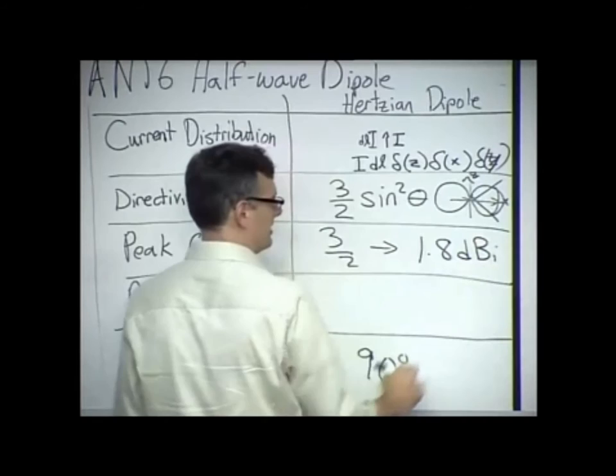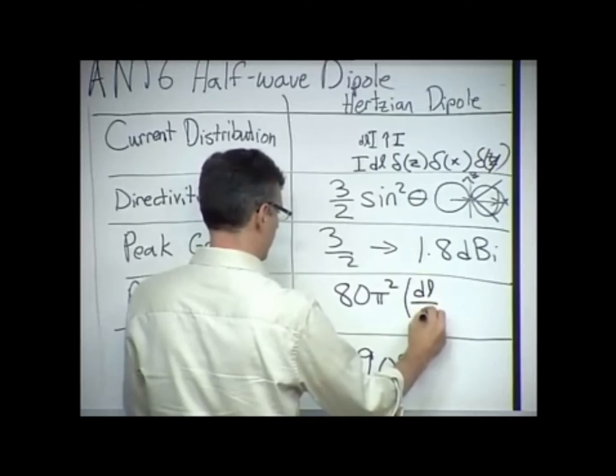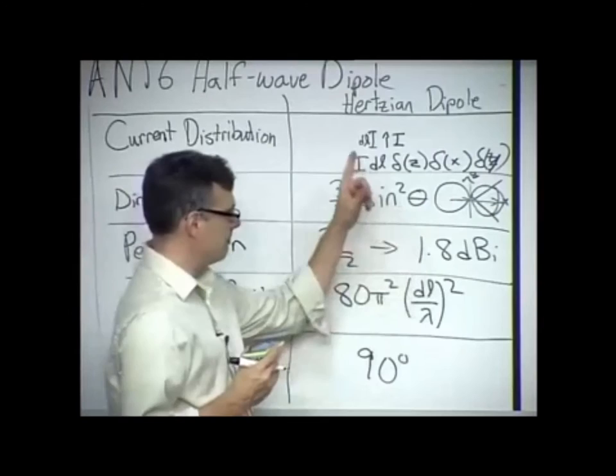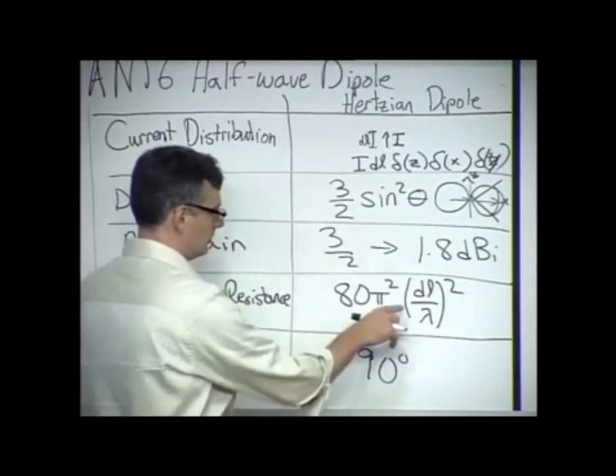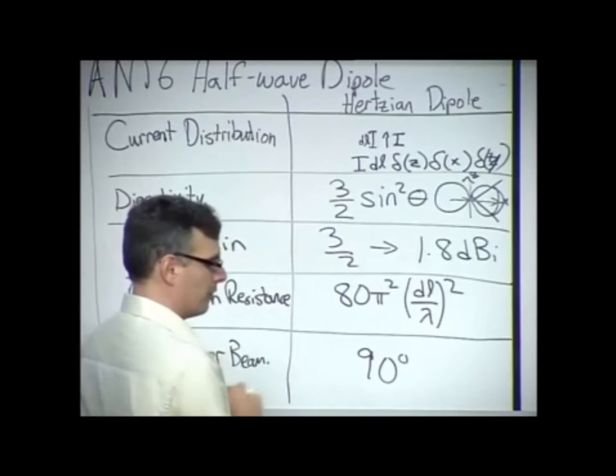And finally, we had an expression, basically 80 pi squared DL over lambda quantity squared. DL is much less than a wavelength, so this is a small number. And you've got to square it to begin with. So, this winds up being a very small number, only a few ohms for an electrically small dipole. Now, that's our Hertzian dipole. That should be just summary of our previous notes.